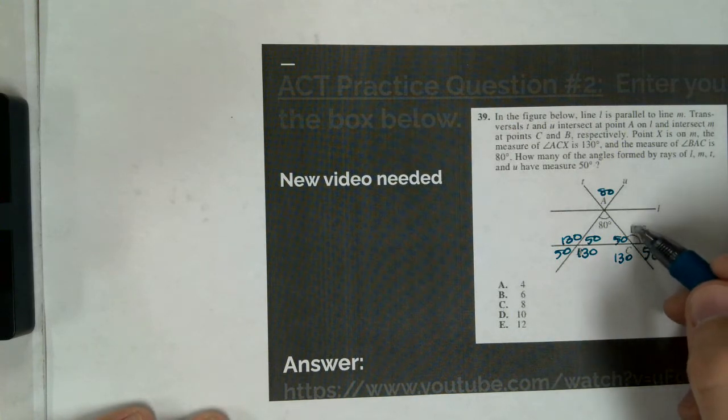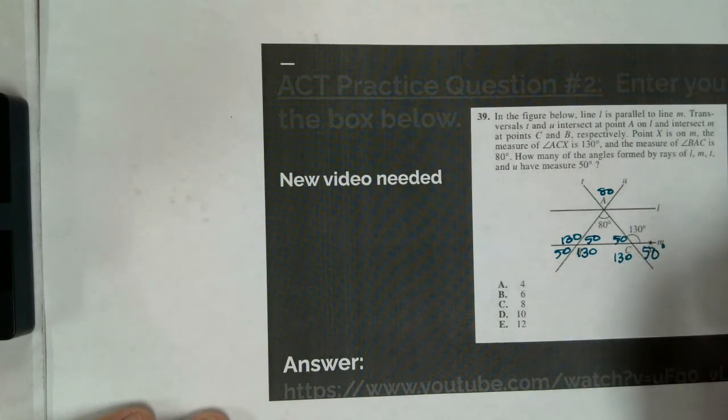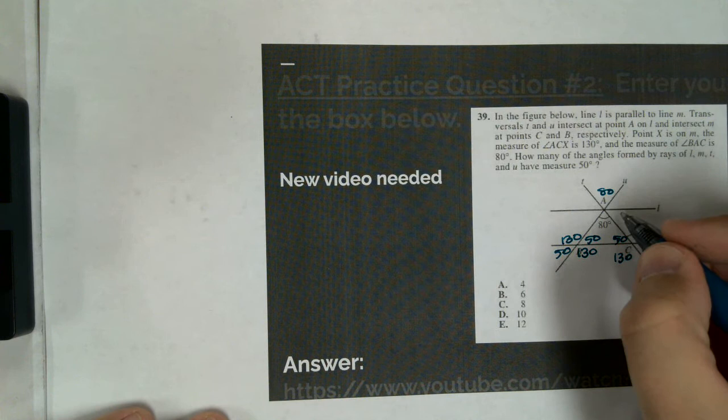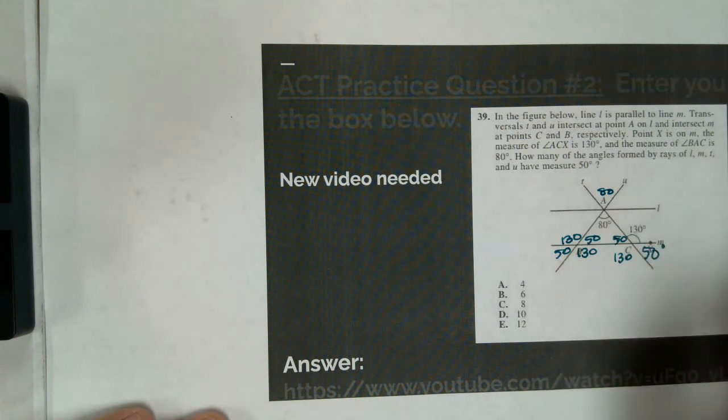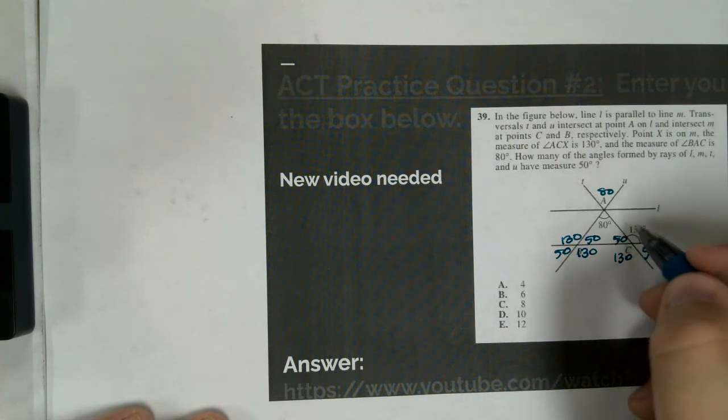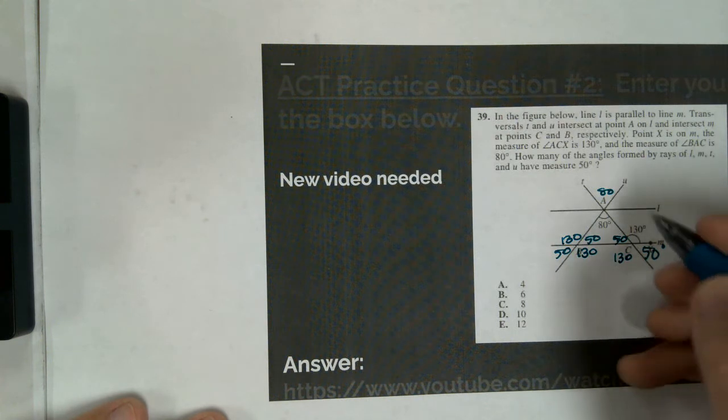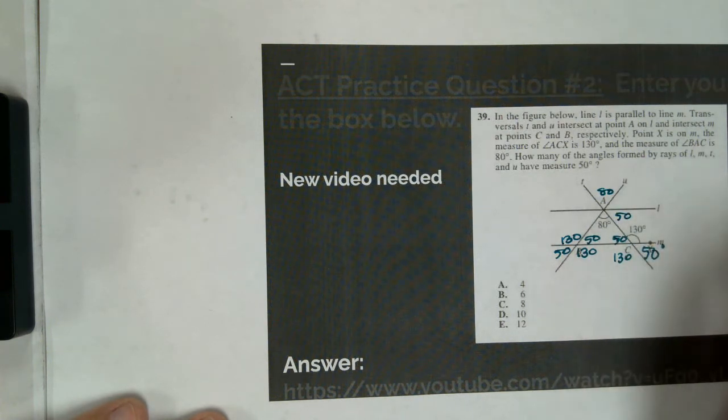So now I come over here. I've got a 130 degree angle right here, and I need to figure out what this angle is. Well, 130 degree and this angle right here, we call same side interior angles, or consecutive interior angles. And these consecutive interior angles must be supplementary. They must equal 180. So subtract 130 from that, and I get 50.